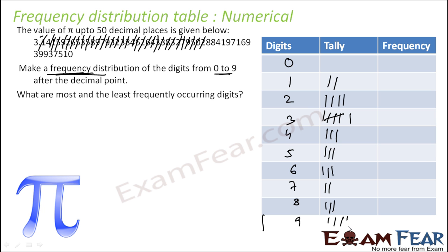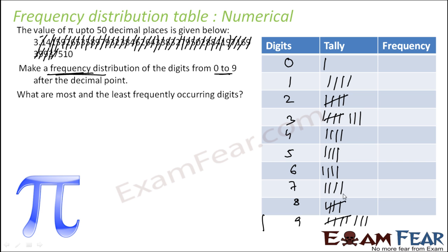Continuing: 3, 3, 8, 8, 4, 1, 9, 8, 8, 4, 1, 9, 7, 1, 6, 9, 7, 1, 6, 9, 3, 9, 9, 9, 3, 7, 3, 9, 9, 3, 7, 5, 1, 0, 5, 1, 0. So if you see the values, these frequencies are 2, 5, 5, 8, 4, 5, 4, 4, 5, and 8.